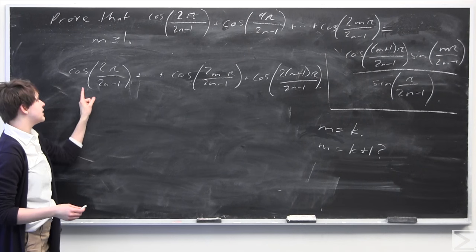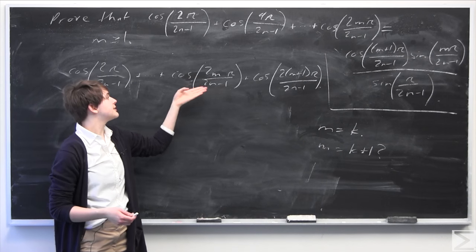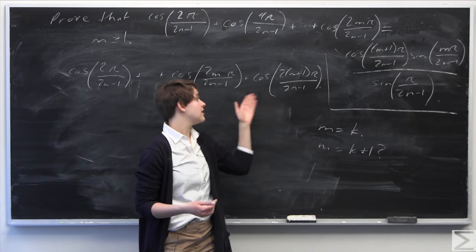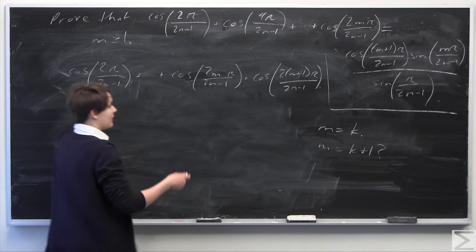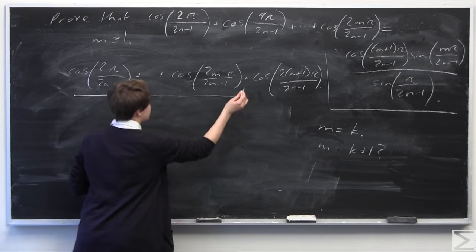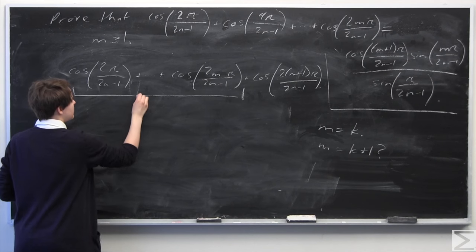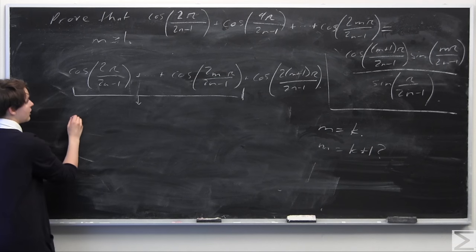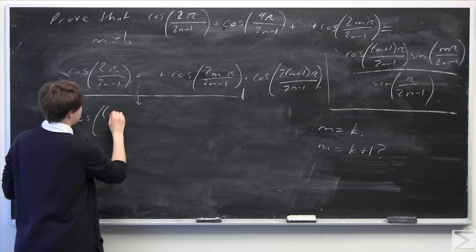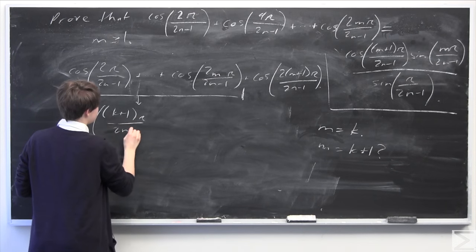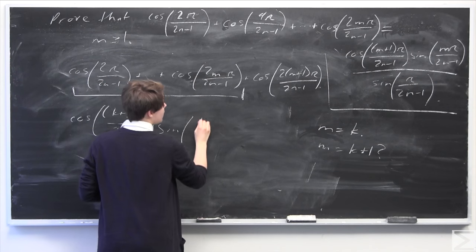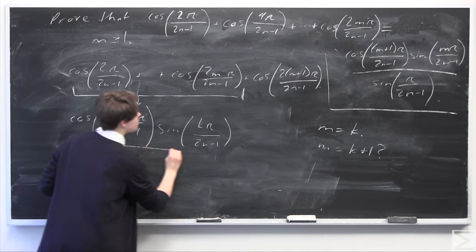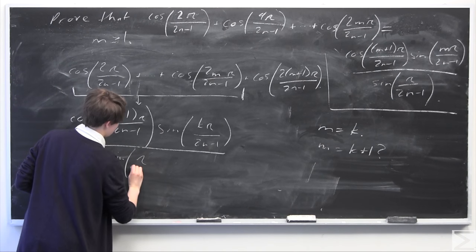This expression — cosine of 2 pi over 2n minus 1 added up all the way to cosine of 2n pi over 2n minus 1 — we know by our induction hypothesis that this equals the right-hand side expression. So I'm going to replace all of this, excluding the n plus 1th term, with the right-hand side in terms of k: cosine of k plus 1 times pi over 2n minus 1, times sine of k pi over 2n minus 1, all over sine of pi over 2n minus 1.